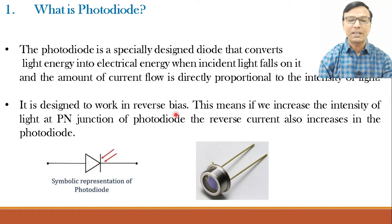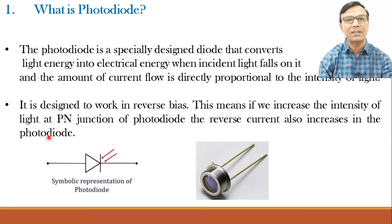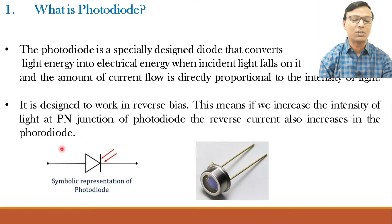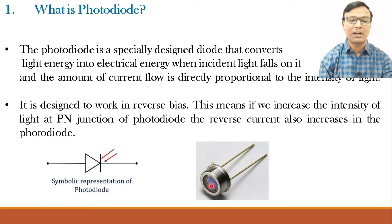It is designed to work in the reverse bias condition. This means if we increase the intensity of light at the p-n junction of the photodiode, the reverse current also increases. So remember, we operate the photodiode in reverse bias. The symbol is made up of the symbol of a normal diode, but with light arrows falling on it. The actual photodiode has a transparent glass above it, under which there is photosensitive material — when light falls on it, charge carriers are generated and current flows through the circuit.